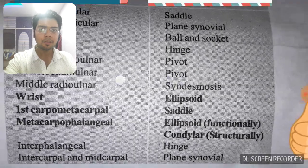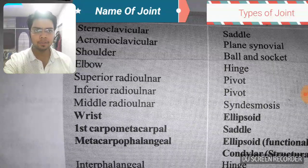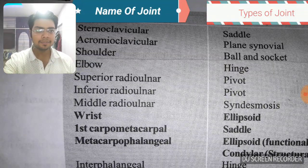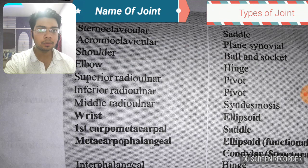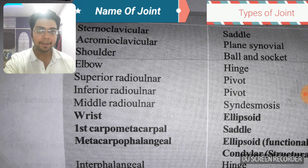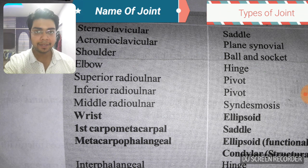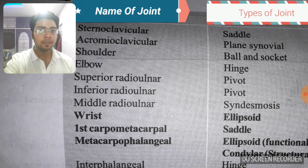Now the common ones: the sternoclavicular joint is a saddle joint — so both the first carpometacarpal and sternoclavicular are saddle joints. Acromioclavicular is a plain synovial joint. The elbow is a hinge joint.